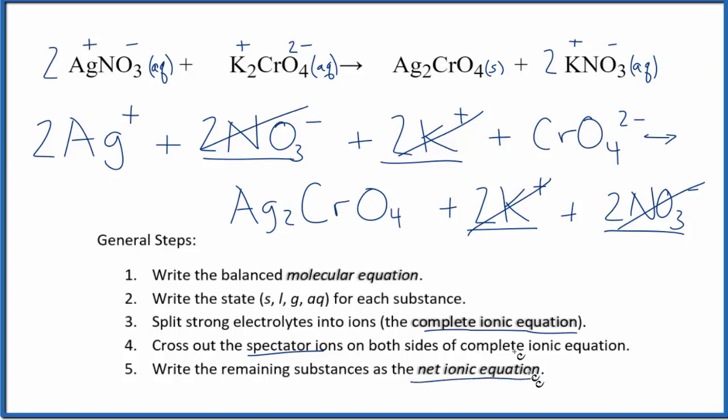So this gives us the net ionic equation for AgNO3 plus K2CrO4. So we have two silver ions. We have our chromate ion. And then we have a silver chromate. Let's clean this up and write the net ionic equation down here.